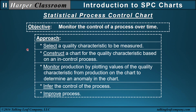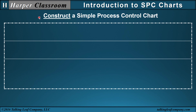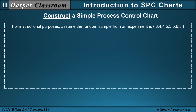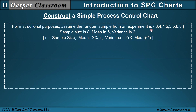Let's assume that we have a quality characteristic to be measured, and let me illustrate the steps to this process by constructing a simple process control chart. For instructional purposes, assume the random sample from an experiment is given, and this random sample is from a quality characteristic which is a continuous variable. From this sample, which is size 8, we have a mean of 5 and a variance of 2, where the sample size, mean, and variance are defined here.